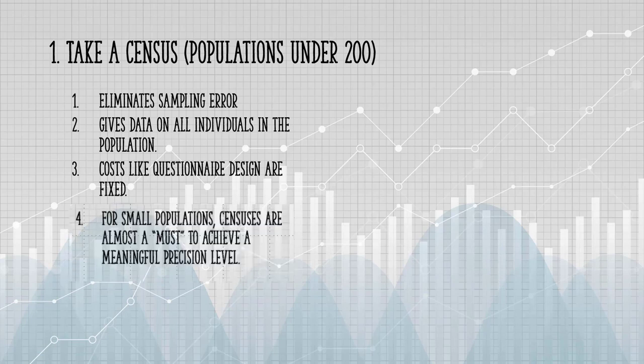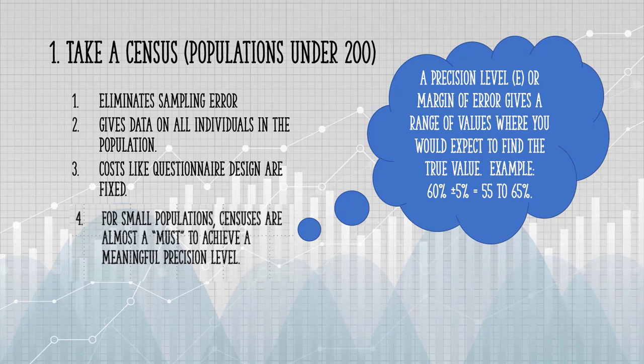For small populations, censuses are almost a must if you want to achieve a meaningful precision level. A precision level is sometimes called a margin of error, and it gives you a range of values where you would expect to find the true population value.